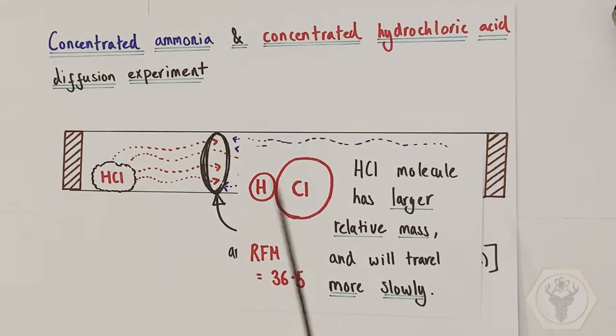It turns out that hydrogen chloride molecules have a larger relative mass than ammonia molecules and will therefore diffuse and travel more slowly. Perhaps a good analogy here would be imagining a very athletic, reasonably small statured runner racing against a less athletic, much larger runner. Maybe a track runner versus a sumo wrestler, for example. Who's going to win that race? The smaller, more athletic runner will always win that race.